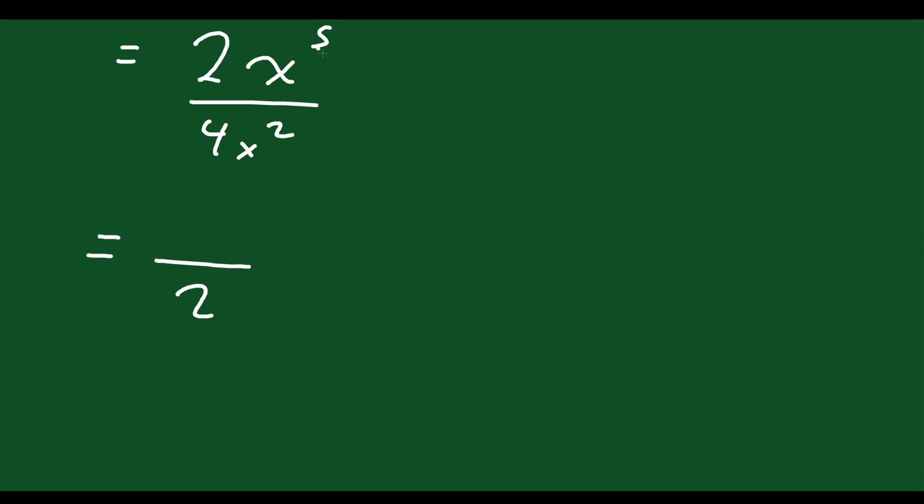And then x to the 5 over x squared. Now remember, when you divide terms with the same base, all you have to do is subtract the exponents. 5 minus 2 is 3, so I'm just going to leave x to the 3 on top. And that will be your final answer.